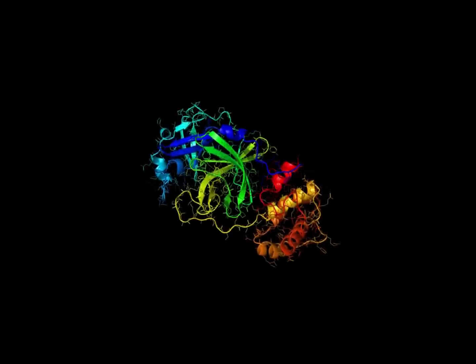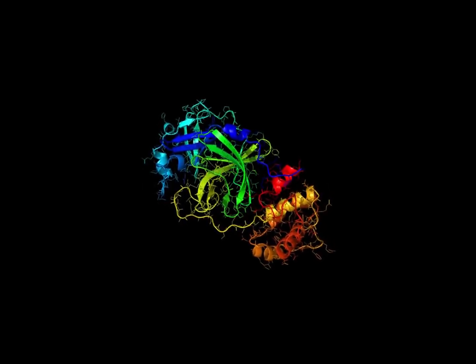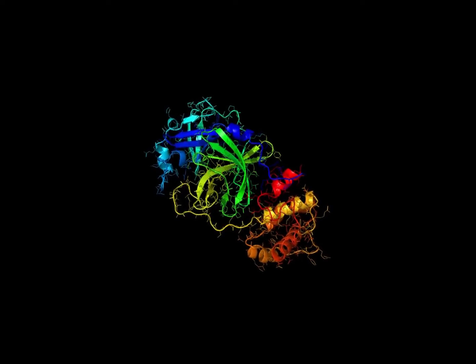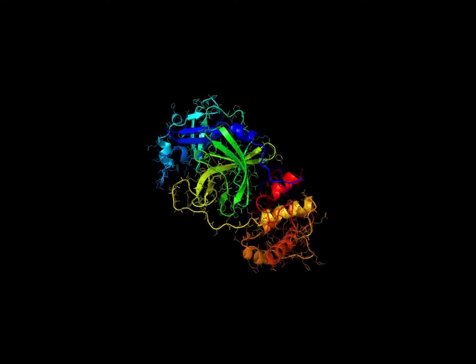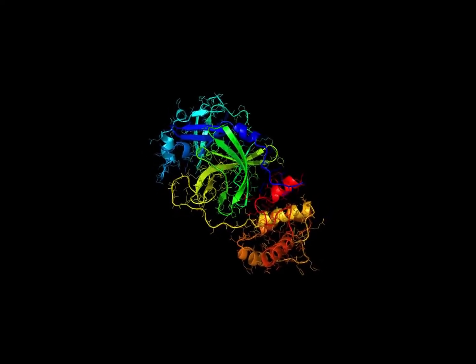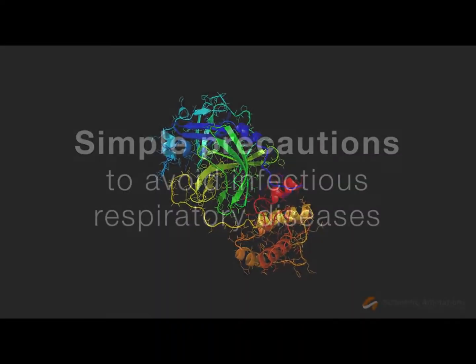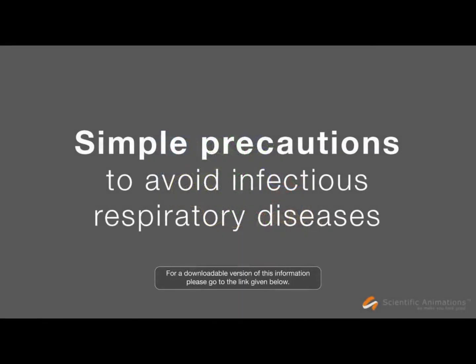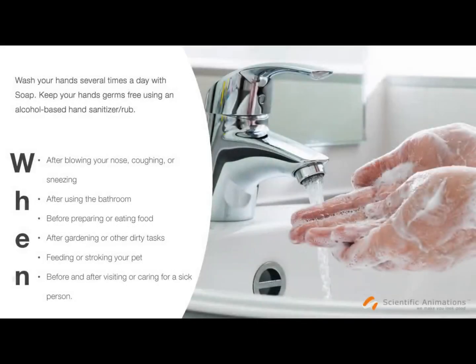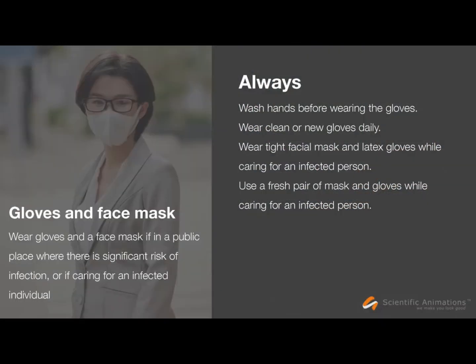It should be noted that the mechanism of action for the 2019 novel coronavirus is unknown. However, scientists in China have sequenced the genome while others have used the sequencing to visualize the structure. There is currently no cure or vaccine for the 2019 novel coronavirus and treatment is only supportive. Therefore, preventing transmission is paramount. As an airborne virus, recommended precautions are similar to those for preventing the flu.